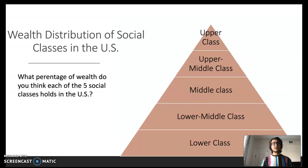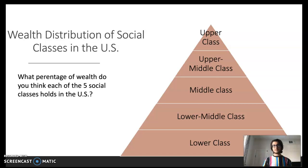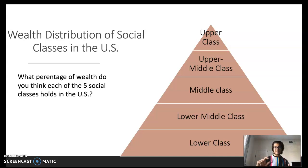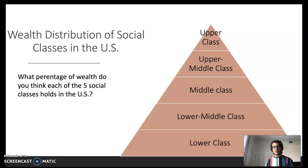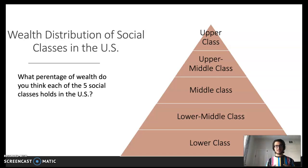Let's talk about the way wealth is distributed across the different social classes in the United States. Think about what percentage of wealth you believe each of the five social classes occupies. A total optimist might say that since each class represents 20% of our population, each should occupy 20% of the nation's wealth. Of course that's not the case — but what might surprise you is just how jarring the disparities are between the amount of wealth certain classes hold compared to others.